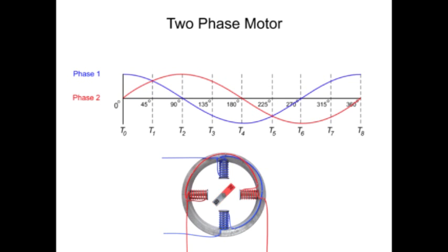At time zero, phase one produces maximum vertical magnetic flux and the rotor aligns itself vertically with the stator poles. Because phase two provides no current flow to the stators there is no horizontal pole on the rotor. At time one, phase one and phase two have equal amounts of current flow which creates a flux between the adjacent poles. This flux causes the rotor to turn 45 degrees to the left.